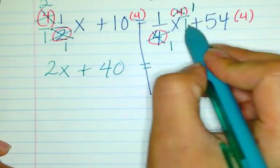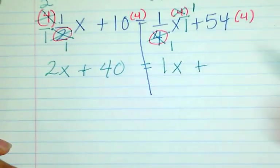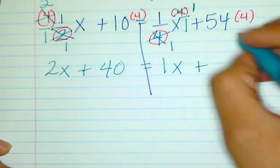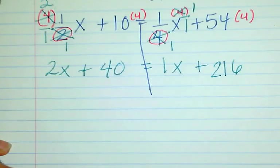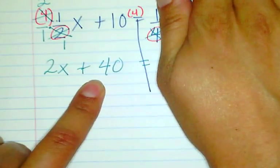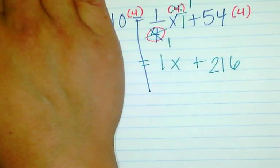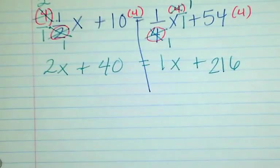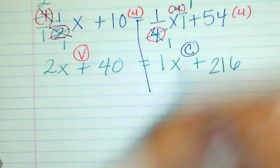I just have those 1s left over, so this would be 1x. Over here I'm multiplying 54 by 4, which gives 216. Once you do that it becomes an easier equation — you cleared the fractions first. Now you simplify each side. I can see that each side has already simplified all the way.